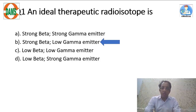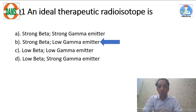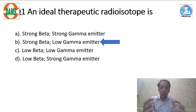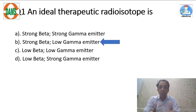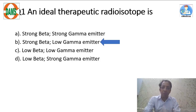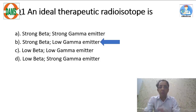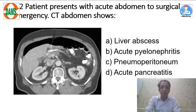Remember an isotope called lutetium-177. When you tag lutetium to DOTATATE, it is used in targeted radiotherapy for neuroendocrine tumors. It is again a strong beta emitter and a weak gamma emitter.